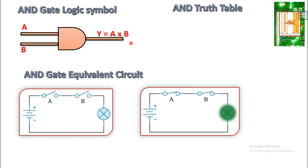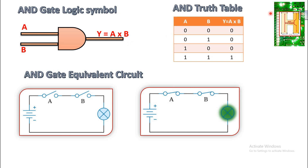Let us see the truth table. The truth table has A and B as inputs and Y equal to A into B as output. When A and B are both logic zero, output is zero. When A is zero and B is one, output is zero. When A is one and B is zero, output is zero. When A is one and B is one, the output is logic one. So both inputs must be logic one to get output logic one.